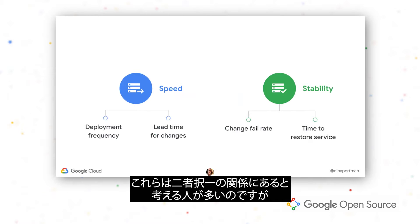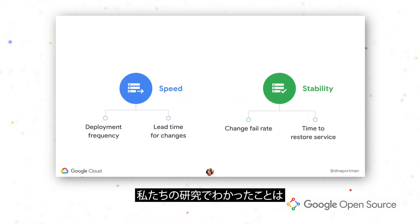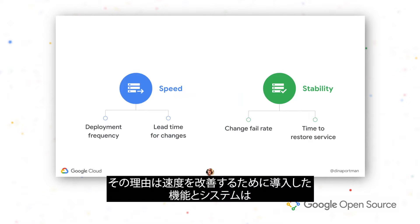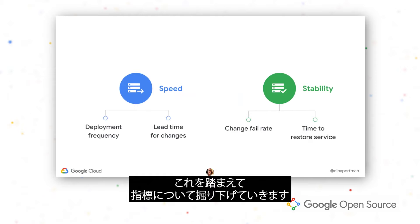On the speed side, we have deployment frequency and lead time for change. And on the stability side, we have change fail rate and time to restore service. A lot of people think that these are either/or metrics. However, what the research has found is that organizations that do really well in speed also do really well in stability, because the capabilities and the systems that you put in place to improve speed go hand-in-hand with stability and vice versa. With that in mind, we're going to dive into the metrics.